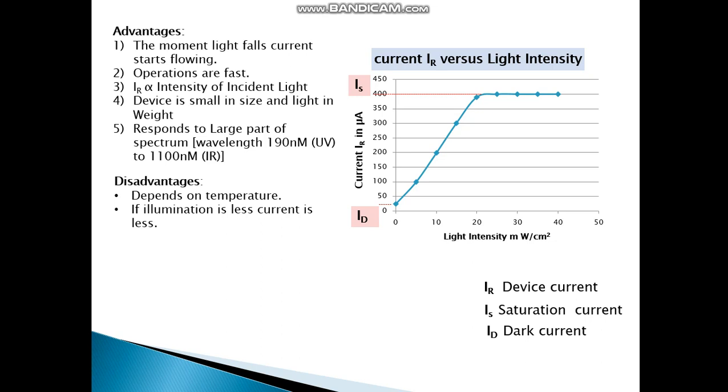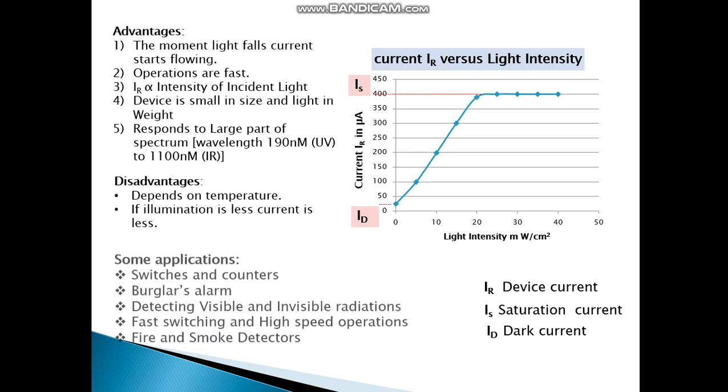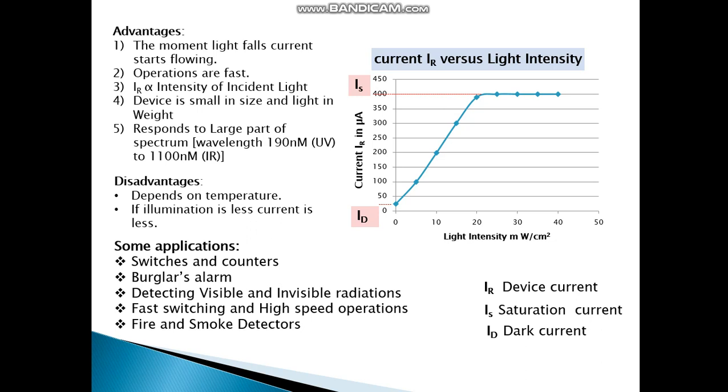Disadvantages: it depends on temperature. If illumination is less, current is less. Some applications are switches and counters, burglar alarm, detecting visible and invisible radiation, fast switching and high speed operations, fire and smoke detectors.